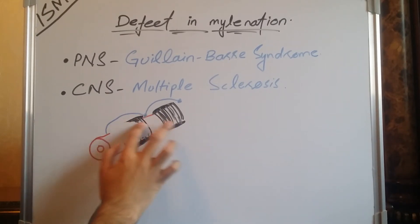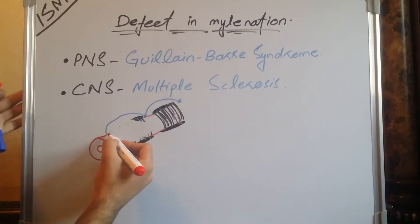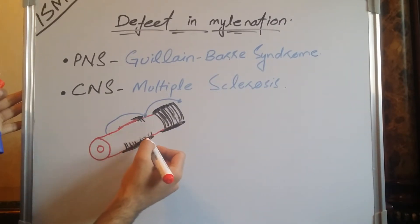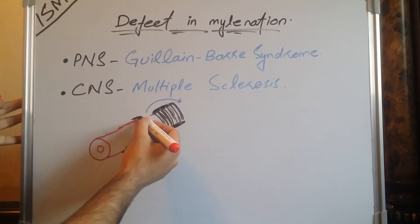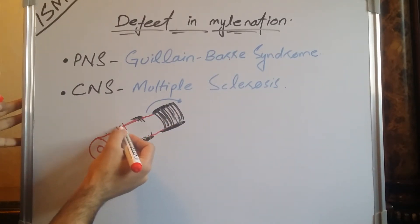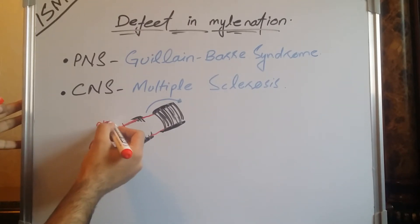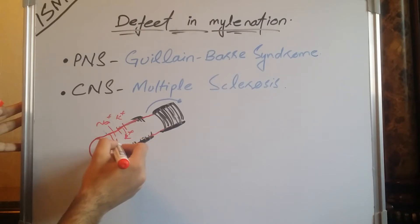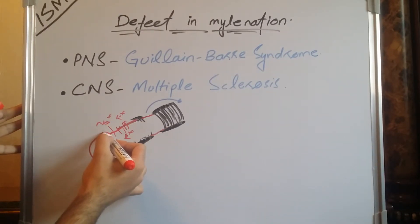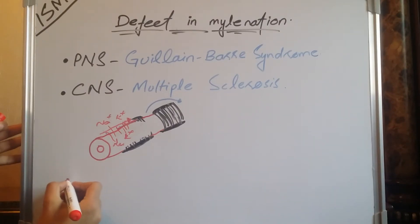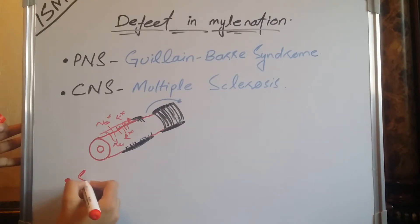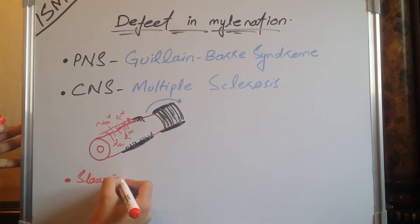When the myelination degenerates and starts to degenerate, the conduction becomes slowed down. Now the ion channels here work differently — potassium and sodium move in and out — and the conduction becomes slow, starting to conduct in a non-saltatory fashion. The defect leads to slow conduction; the neuron becomes slow in conduction.